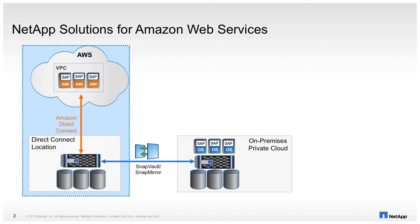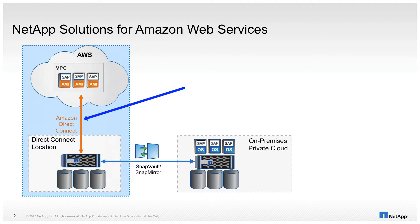With NPS, you run your own NetApp controller at a Rackspace from a co-location provider very close to an Amazon data center, connected via Amazon Direct Connect directly into your Virtual Private Cloud, VPC. The connection is realized via dark fiber with low latency and high throughput of up to 12 10-gigabit links.